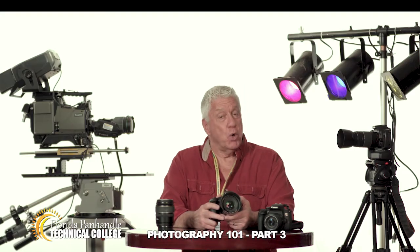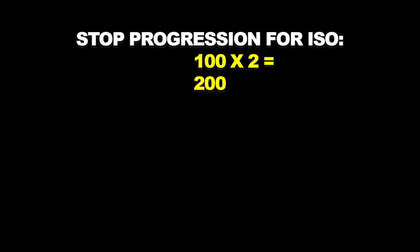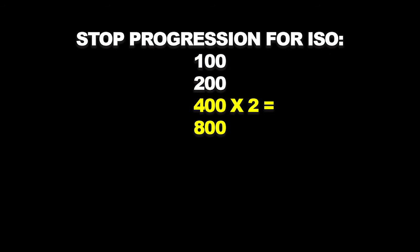Starting with an ISO of 100, light is doubled with each stop. So an ISO of 200 allows twice as much light as an ISO of 100, and an ISO of 800 allows twice as much light as an ISO of 400.